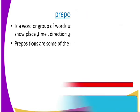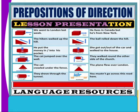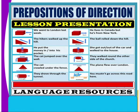If we look at prepositions of direction as shown in the picture: 'We went to London last week' — 'to' shows direction. 'The hikers walked up the hill' — 'up' shows where the hikers are walking. 'He put the money into his pocket' — 'into' shows where. 'The cat jumped over the wall' — 'over,' as you can see with the arrow. 'The cat crawled under the fence' — 'under' shows where the cat crawled.